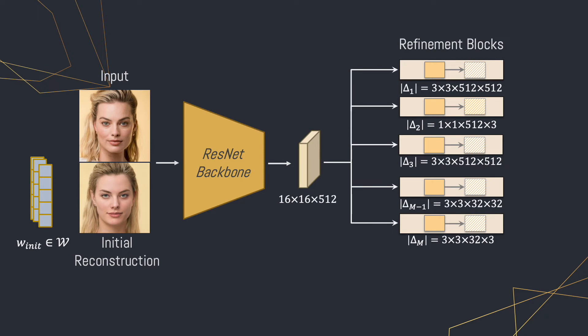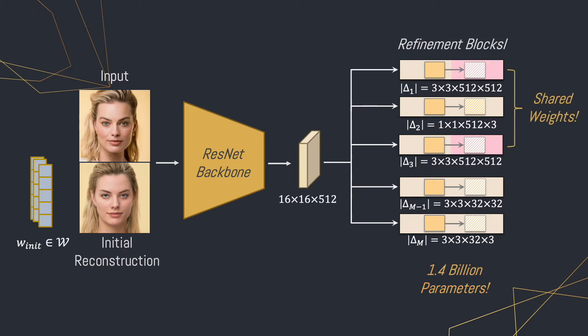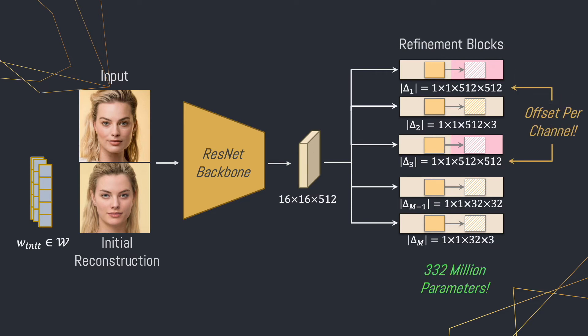We take the outputs of each refinement block and apply a multiplicative scaling factor over the original weights of the corresponding convolutional layer in the synthesis network. But we have a problem: constructing a hypernetwork that outputs this many parameters results in a network with over 3 billion parameters, making the design impractical. First, since a lot of the refinement blocks have the same output size, we can share weights between these layers, reducing the parameter count by about half to around 1.4 billion, with the bonus of information sharing between layers. Next, we learn an offset for each convolutional kernel rather than for each parameter, decreasing our network to around 300 million parameters, which is in line with standard encoders such as PSP and E4E.